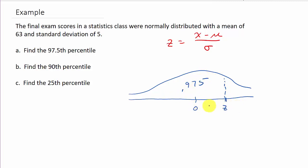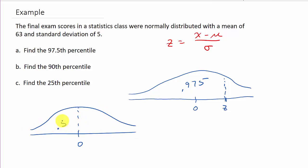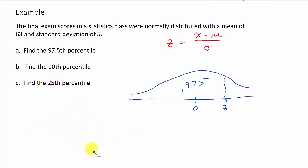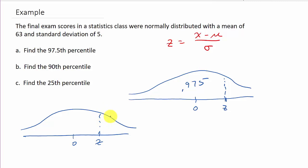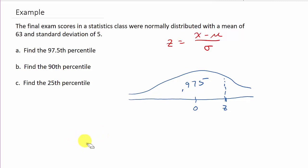We're looking for a z value where the area to the left is 0.975. We know the z value is to the right of 0 because the area to the left of 0 is 0.5, and since 0.975 is greater than 0.5, the z value must be over to the right. The chart I'm using gives the area to the left of the z value.